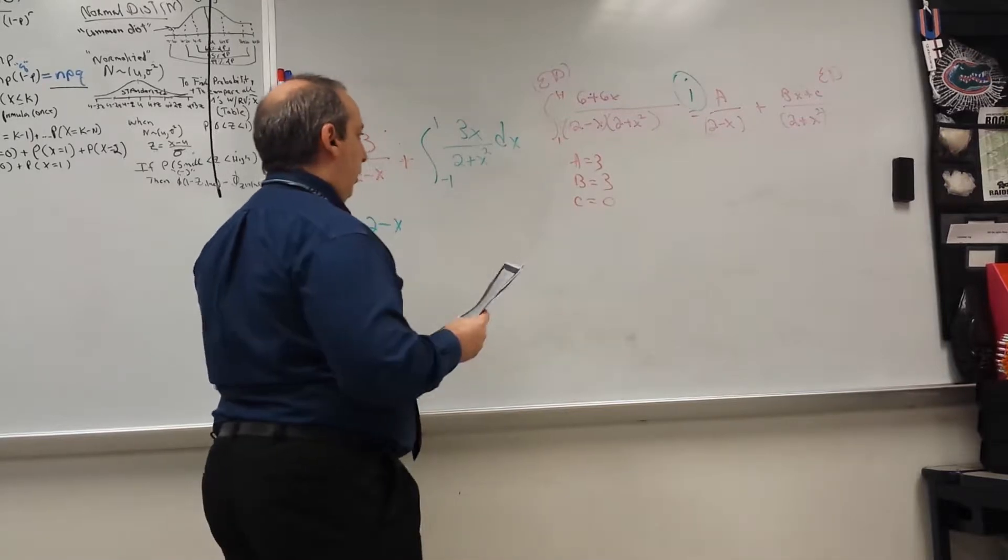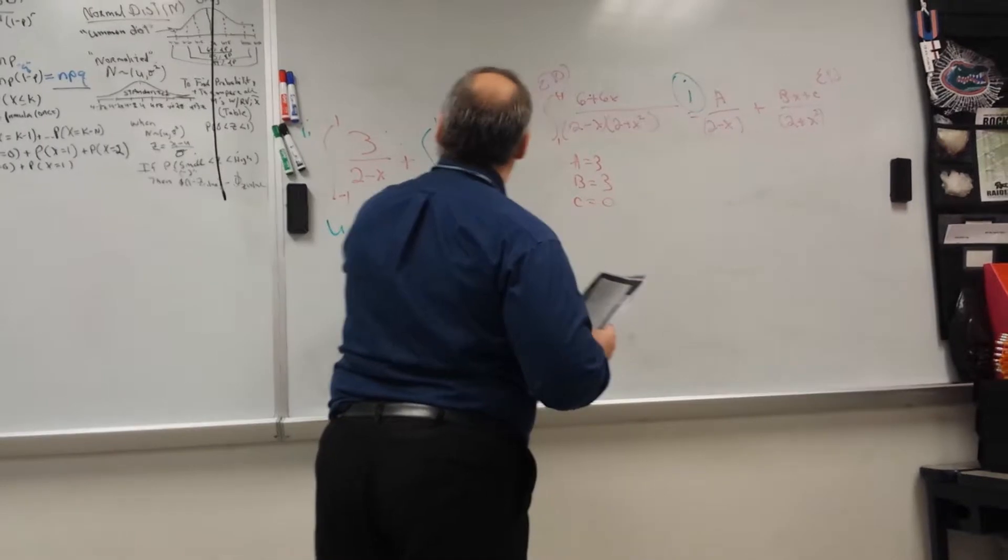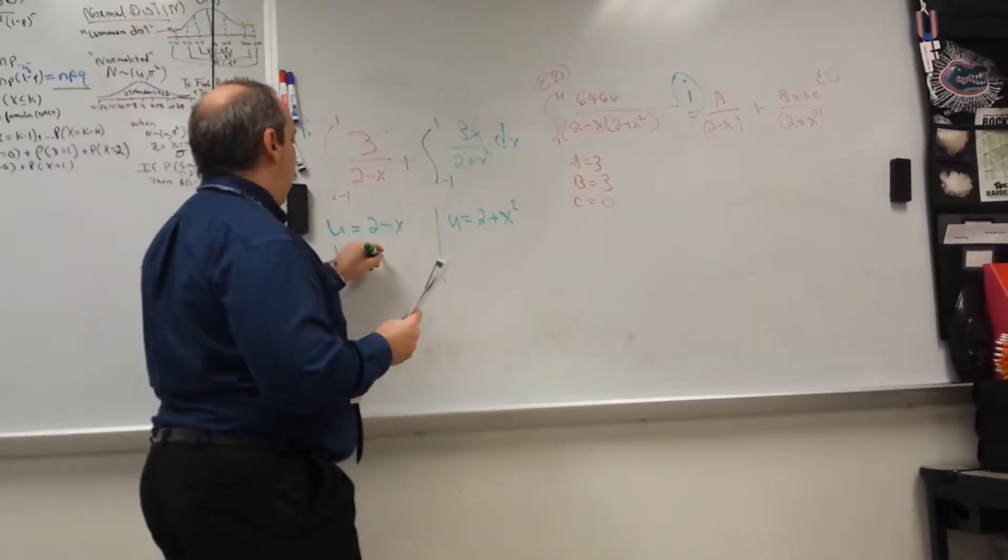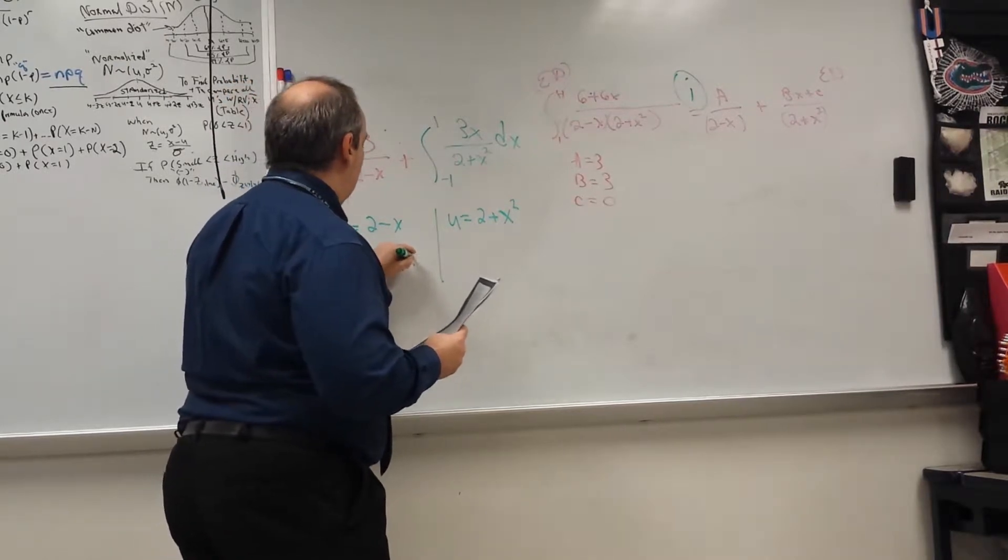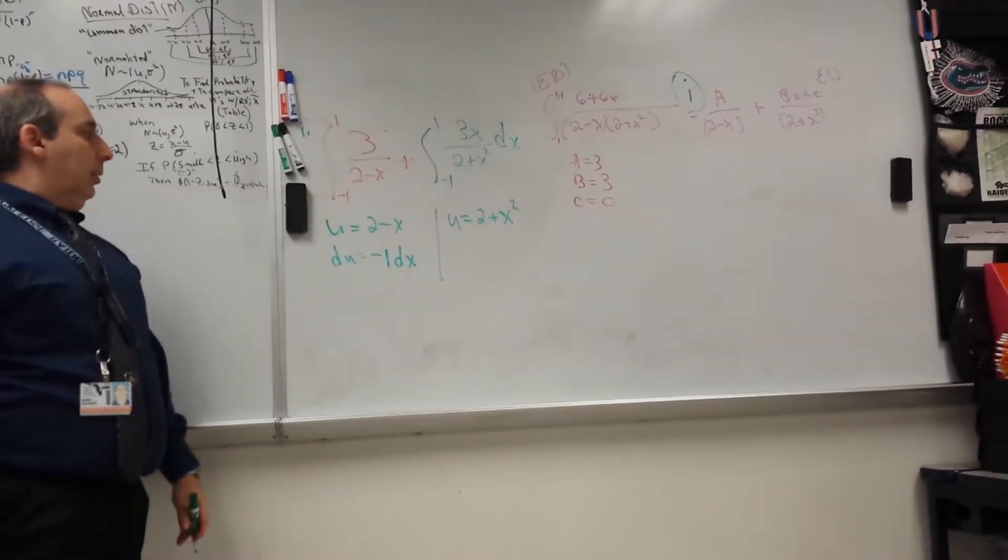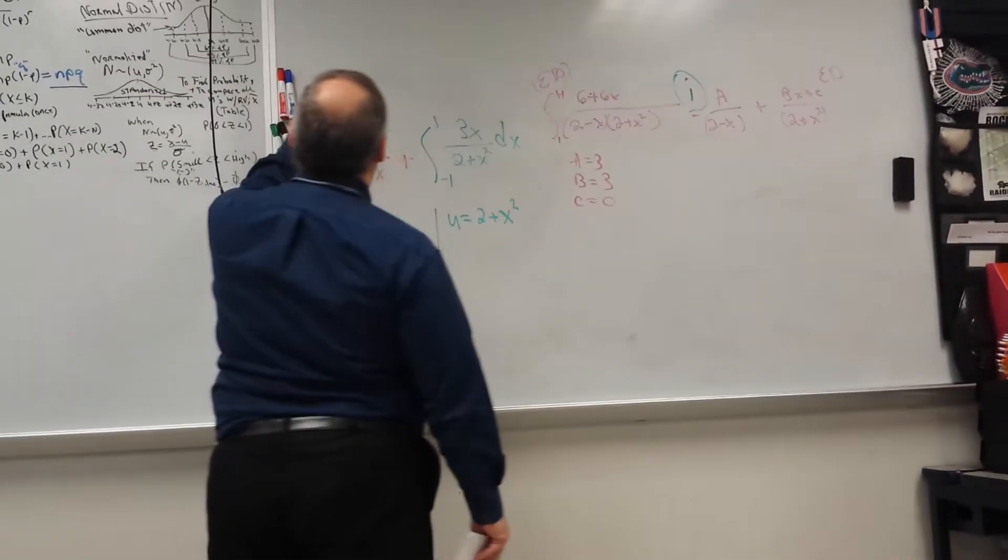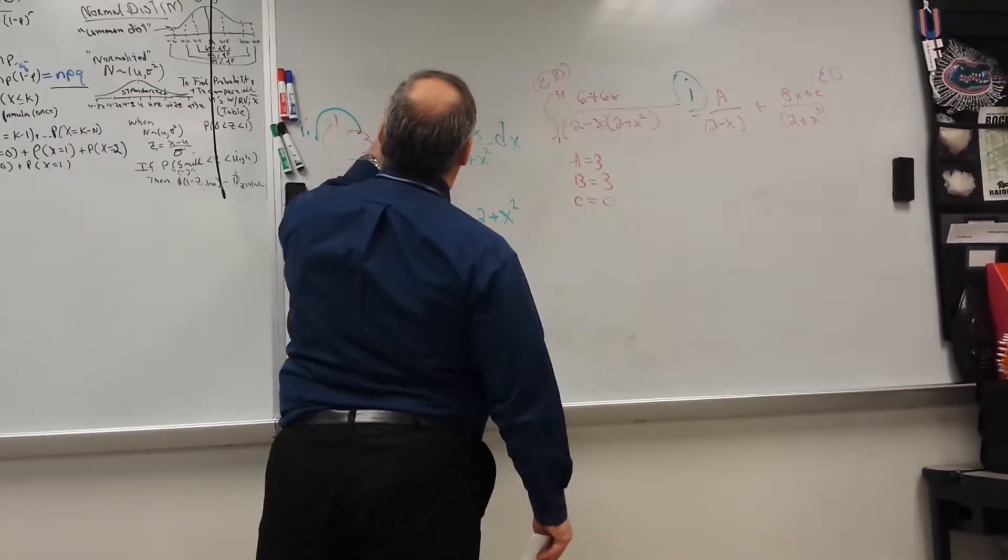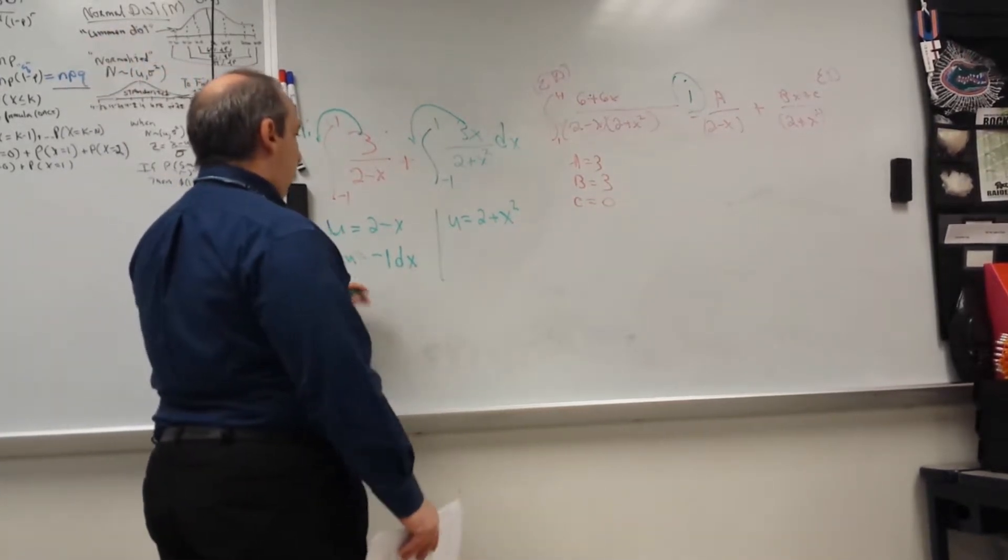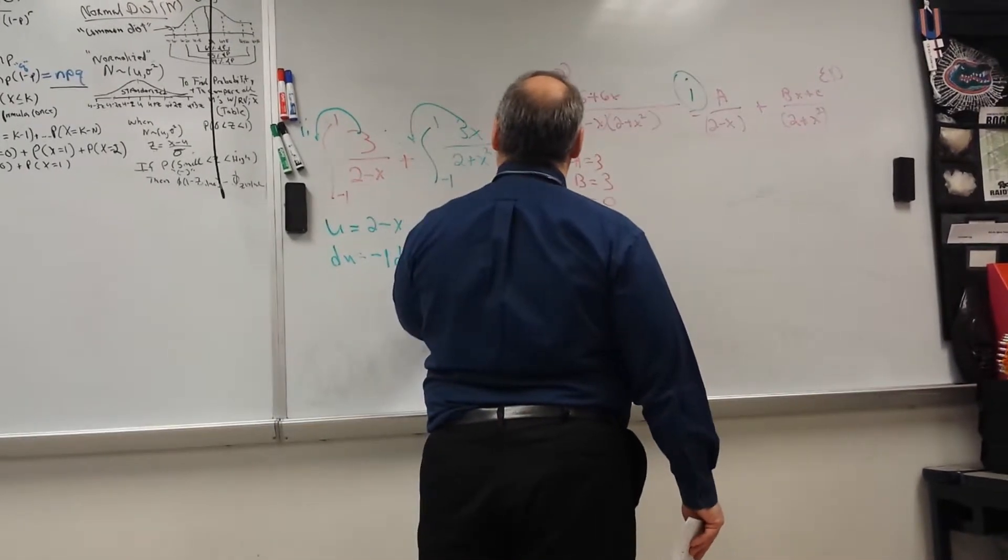2 minus x, right? So far, so good? And then this one over here is u is equal to 2 plus x squared. So what's du right here? Derivative of the bottom. Negative 1 DX, right? Because the derivative just comes out there. Then du is equal to just 2x DX.